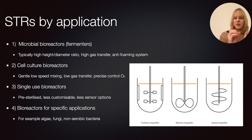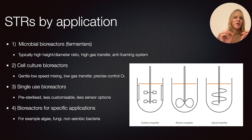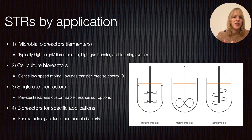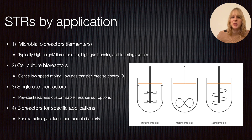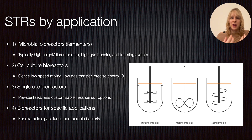The second application is cell culture systems, which require exactly the opposite conditions. These cells don't have a cell wall, so they don't tolerate high shear well. They also grow much slower compared to microbial cultures — for instance, E. coli doubles every 15 to 20 minutes. So for cell culture you want very gentle, low-speed mixing, and gas transfer can be much lower compared to microbial bioreactors because the oxygen demand is much lower due to their slower growth.